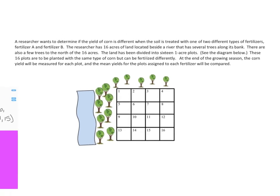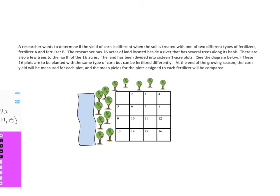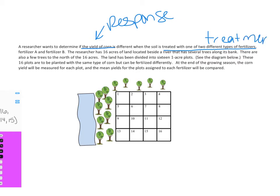Here's an example to talk about why random assignment is so important. A researcher wants to determine if the yield of corn is different when the soil is treated with one of two different types of fertilizer. The yield of corn is the response — yield means how much corn you're going to get. The different fertilizers are the treatment, which is also our explanatory variable. The dependent variable — our response — is the yield of corn.